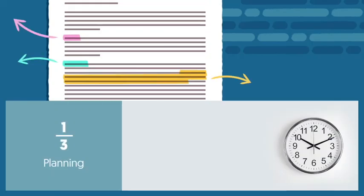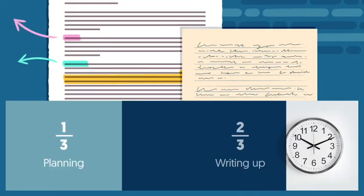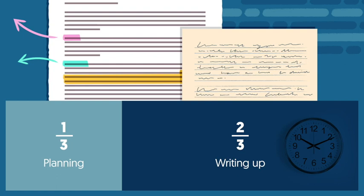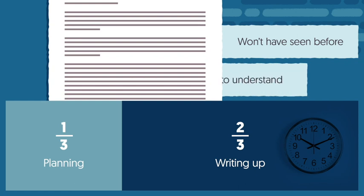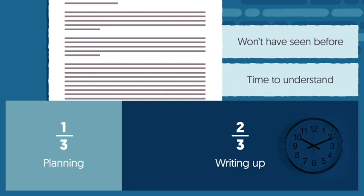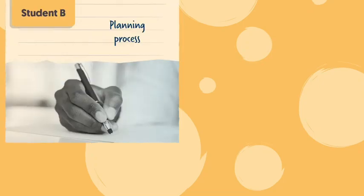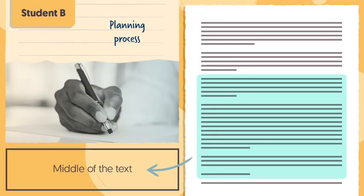Just as with Paper 1, Question 2, it's wise to think carefully and plan what you'll write for your comment — the top bullet point of the mark scheme — so you can aim for the full marks for the level. A good tip is to aim to spend about a third of your time planning and two-thirds writing up. This can seem a little scary, but remember that you're working with source material that you won't have seen before, so you need to give yourself time to understand it to have the best chance of success. To show how this can be done, let's take a look at another example of a student planning, this time from the middle of the text.